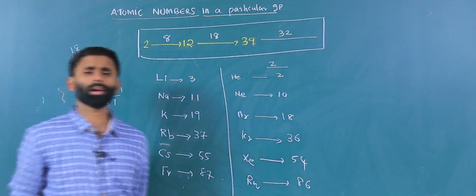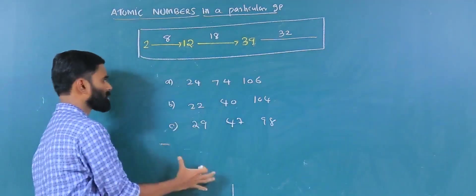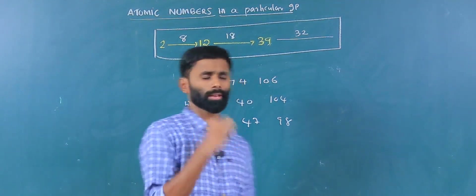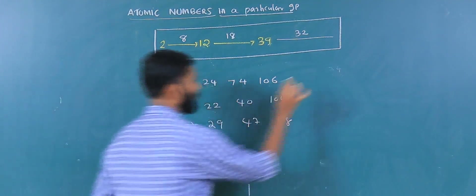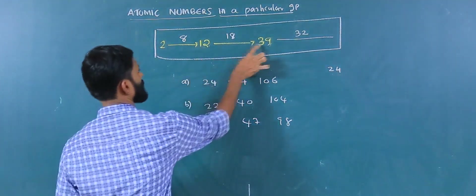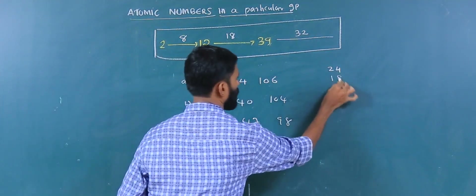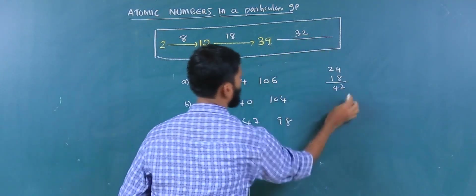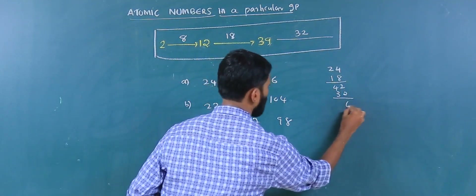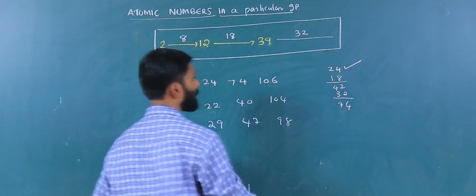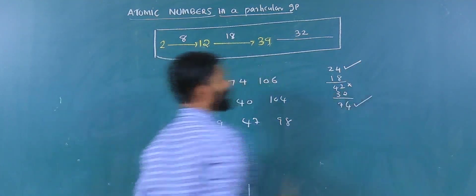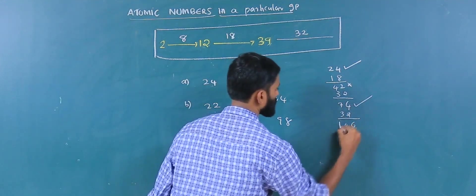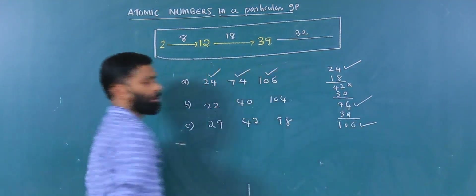Now we are going to apply this to practice questions. In the first question, there are atomic numbers to identify which group they belong to. Take 24: it falls in the second section, so we add 18 to get 42. Then 42 is also in that section, so we add 32 to get 74. Then 74 plus 32 equals 106. So 24, 74, and 106 are group elements.